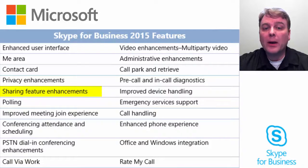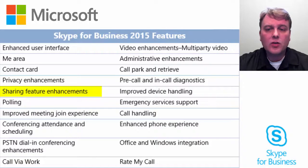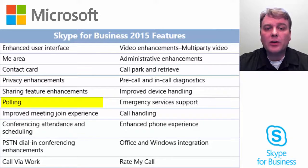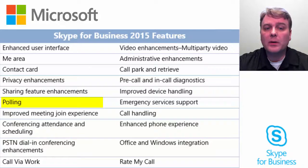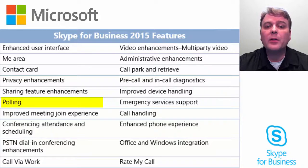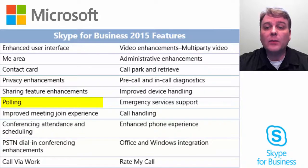Users can collaborate by using the whiteboard with tools such as text, ink, drawings, and images. Improvements were also made to polling. The polling feature enhances collaboration by enabling presenters to quickly determine participants' preferences. During online meetings and conversations, presenters can use polling to gather anonymous responses from participants. Presenters can view poll results and choose to show or hide the results to the attendees.